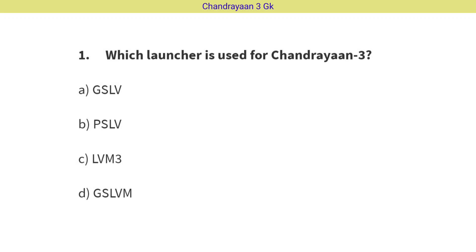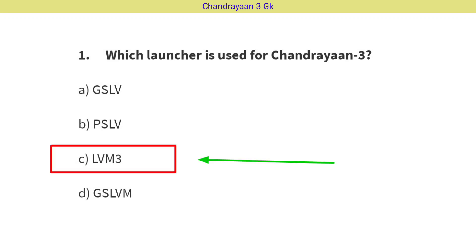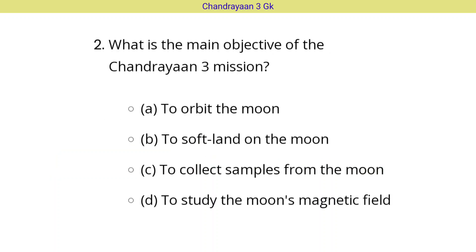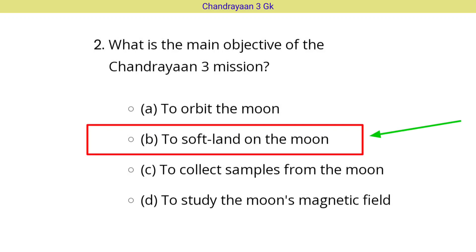Question No. 1: Which launcher is used for Chandrayaan-3? The correct answer is Option C, i.e. LVM-3. Question No. 2: What is the main objective of the Chandrayaan-3 mission? The correct answer is Option B: to soft land on the moon.